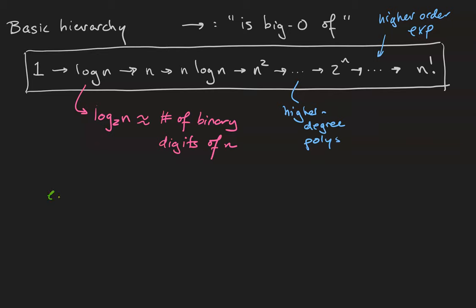So let's take, for example, the function log n, which is big O of n cubed. Log n appears here in our hierarchy. n cubed is between n squared and 2 to the n, so log n is big O of n cubed.